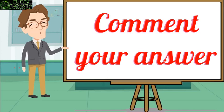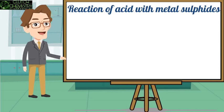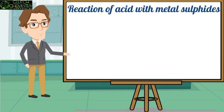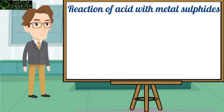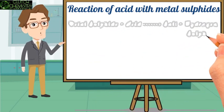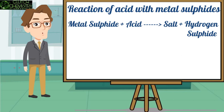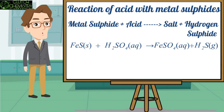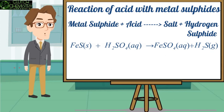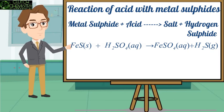Students, now a small but very important topic — this is practical chemistry: the reaction of acid with metal sulfide. Note: this is sulfide, not sulphite. The general reaction is that metal sulfide reacts with acid to form salt plus hydrogen sulfide (H2S) gas as a by-product. For example: iron sulfide plus H2SO4 gives FeSO4 plus H2S.